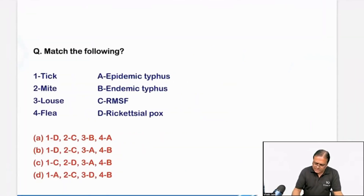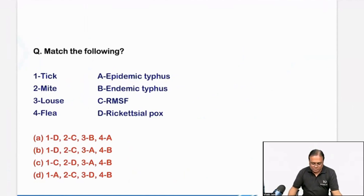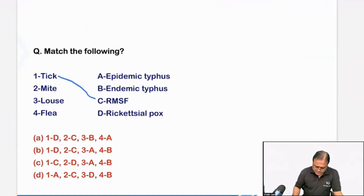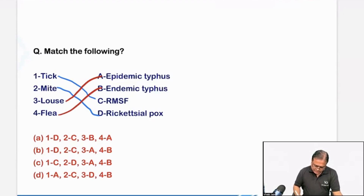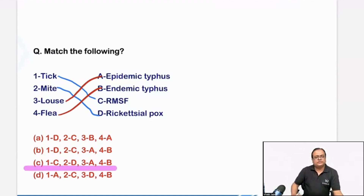This was a question from communicable disease, vector-borne diseases. I told you that the rickettsial disease table we have to remember — a question will come on either vector or the reservoir. We know Rocky Mountain spotted fever is tick, rickettsial pox is mite, epidemic typhus is known as louse-borne typhus, and endemic typhus or murine typhus is known as flea-borne typhus. So this is C, D, A, and B — choice number C.